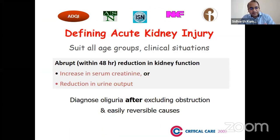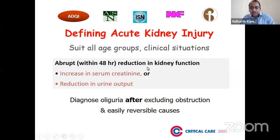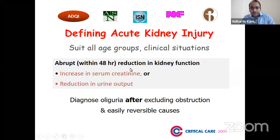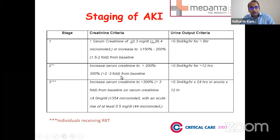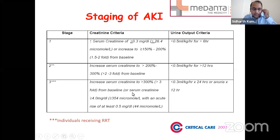The first definition was the AKIN definition—the Acute Kidney Network—which came in 2007, defining AKI to suit all age groups and all clinical situations: an abrupt within 48 hours reduction in kidney function as either an increase in serum creatinine or reduction in urine output. It defined a creatinine rise of 0.3 mg/dL as AKI stage one, 200-300% from baseline as stage two, and more than 300% as stage three. Importantly, if a child was on RRT, that was stage three.